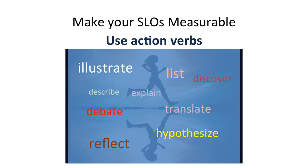We need to make our SLOs measurable. How do we make them measurable? Think about using action verbs. Here are some examples of action verbs. If you want students to be able to translate, you probably want to use a translation task. If you want students to be able to reflect, you want to use reflection tasks in your lessons or projects. Therefore, using action verbs makes the assessment much easier because they already direct us to the kind of activities we can use in our assessment.